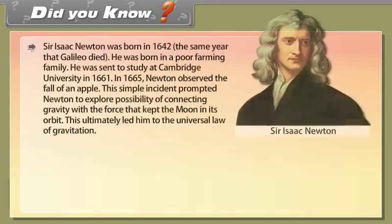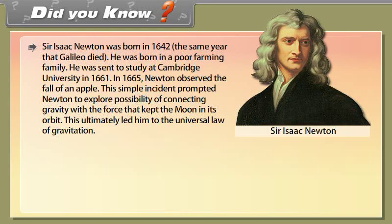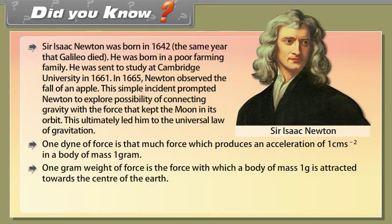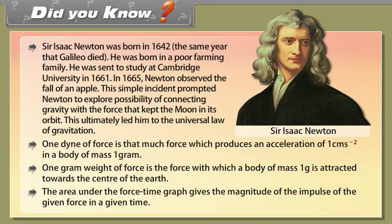Did you know? Sir Isaac Newton was born in 1642, the same year that Galileo died. He was born in a poor farming family and was sent to study at Cambridge University in 1661. In 1665, Newton observed the fall of an apple, which prompted him to explore the connection between gravity and the force keeping the moon in its orbit, ultimately leading to the universal law of gravitation. One dyne of force produces an acceleration of 1 cm/s² in a body of mass 1 gram. The area under the force-time graph gives the magnitude of impulse.